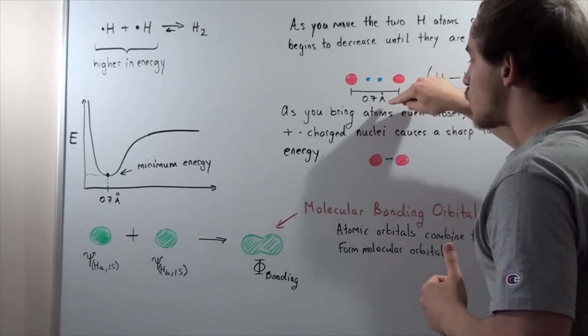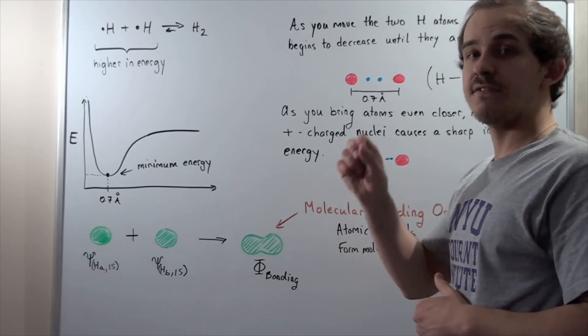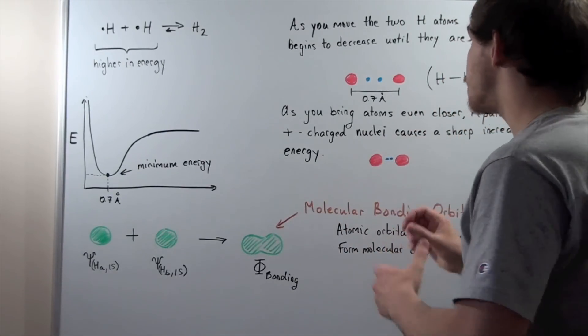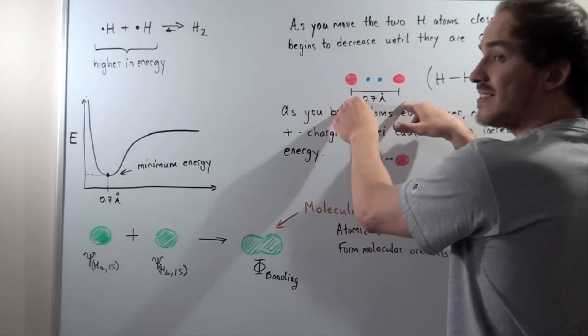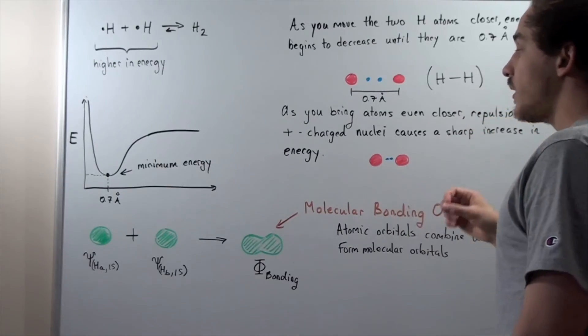When they're 0.7 angstroms—angstroms simply means 1 times 10 to the negative 10 meters apart—when they're this distance apart, a bond will form, a covalent bond will form.